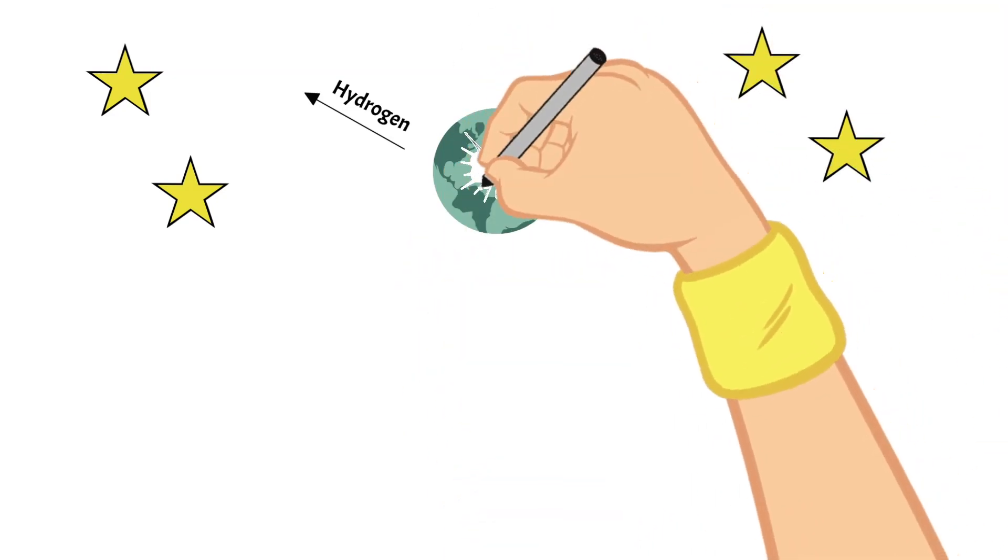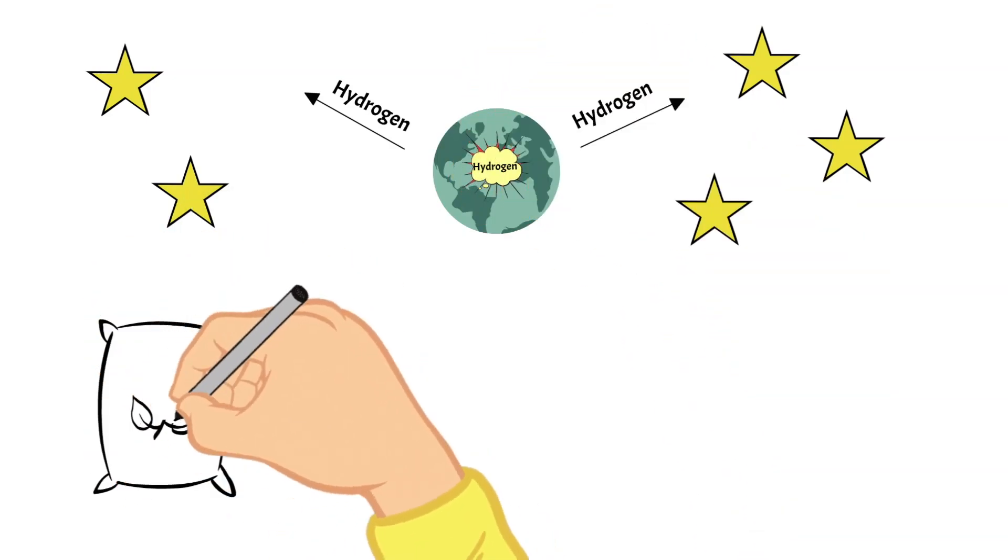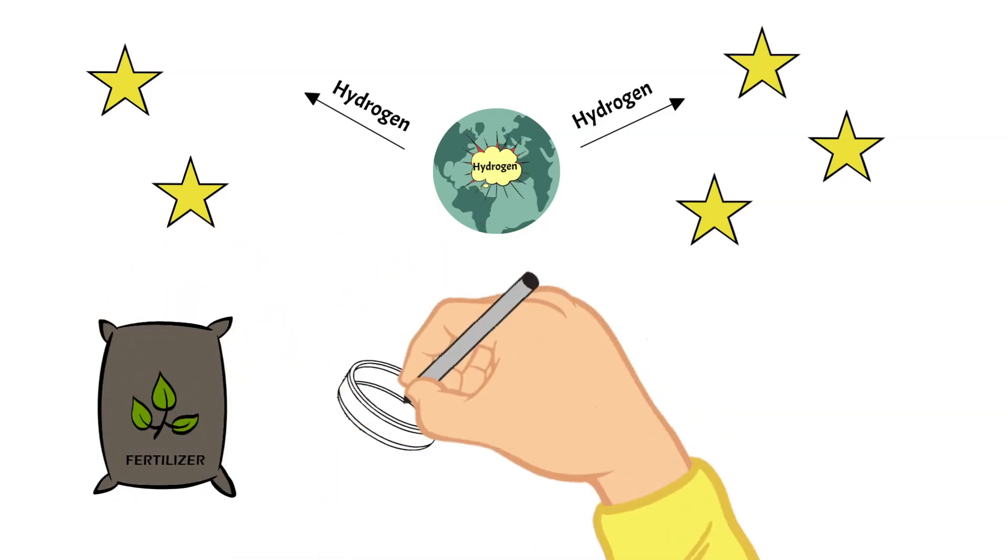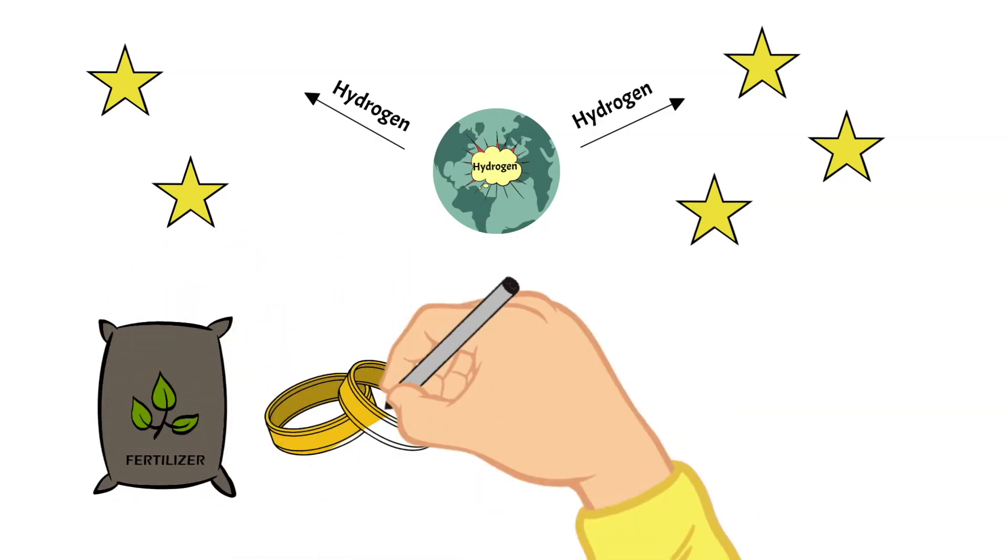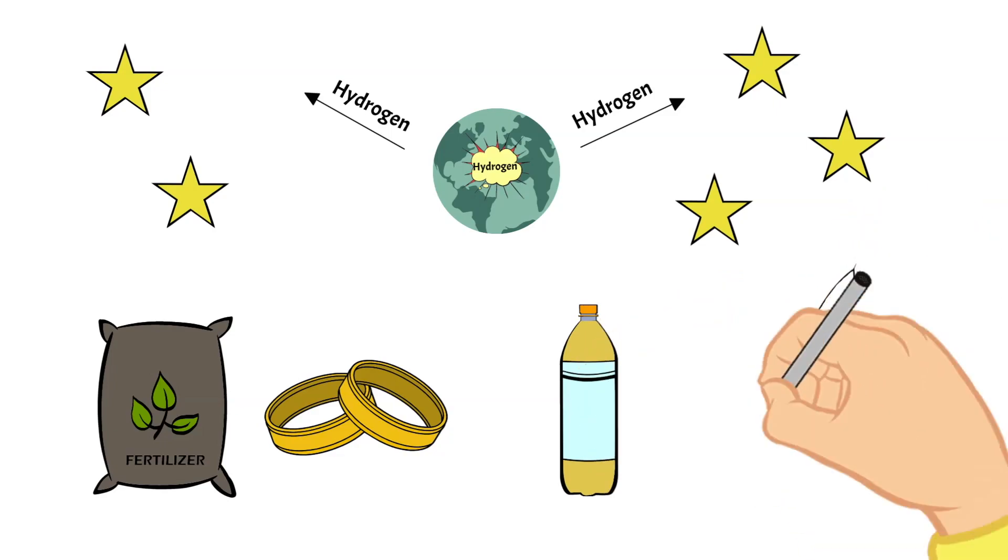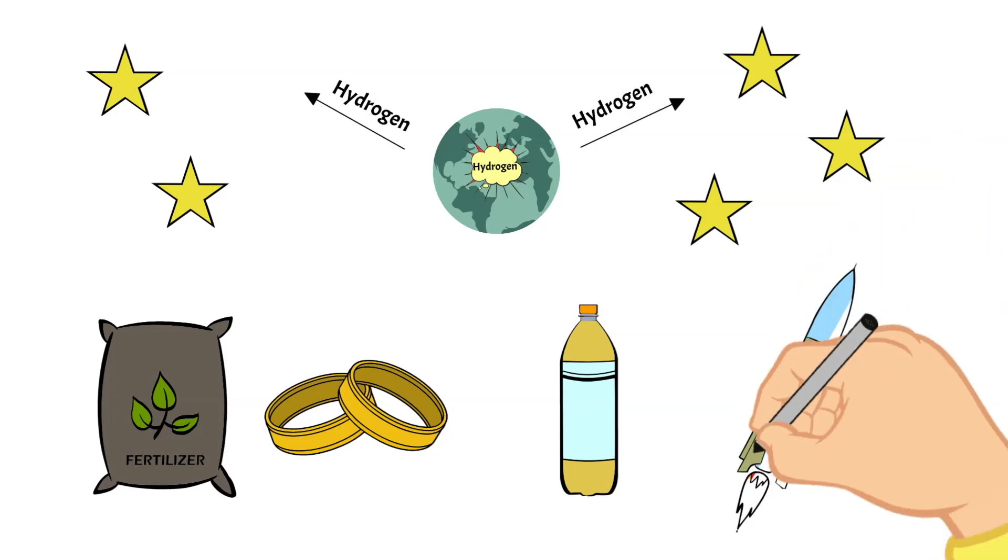We use hydrogen for many different things. We can use it to make ammonia for fertilizers. We can use it to refine metals and we can use it to make material like plastic. Hydrogen is also used in rocket fuel where liquid hydrogen is combined with liquid oxygen to produce a very large explosion.